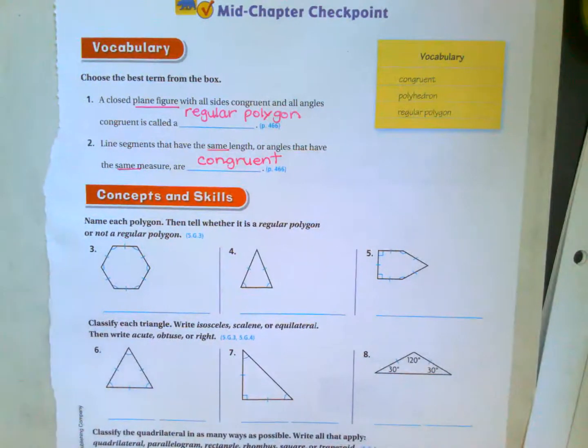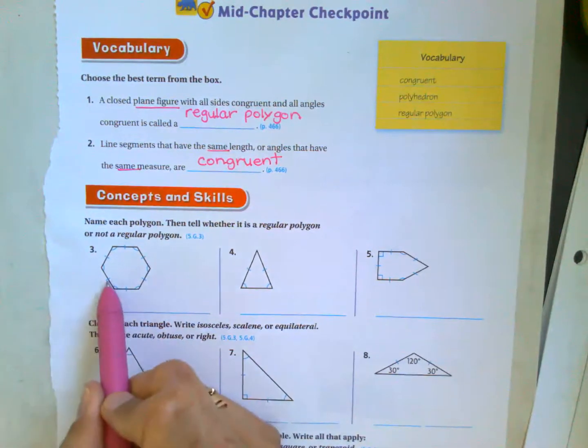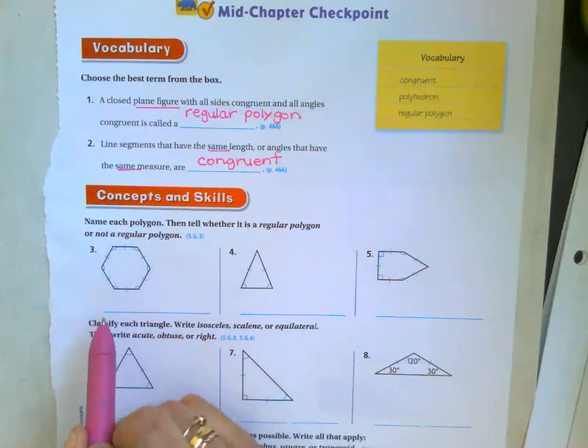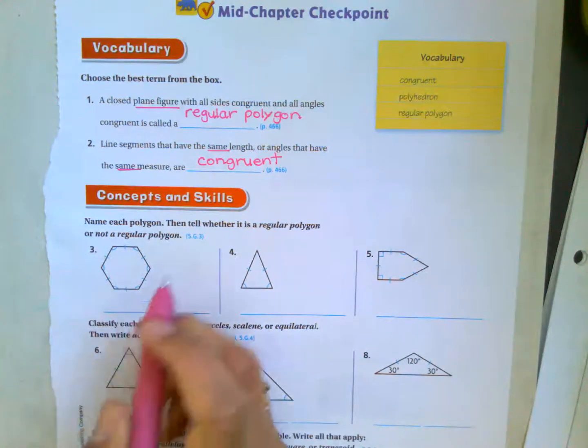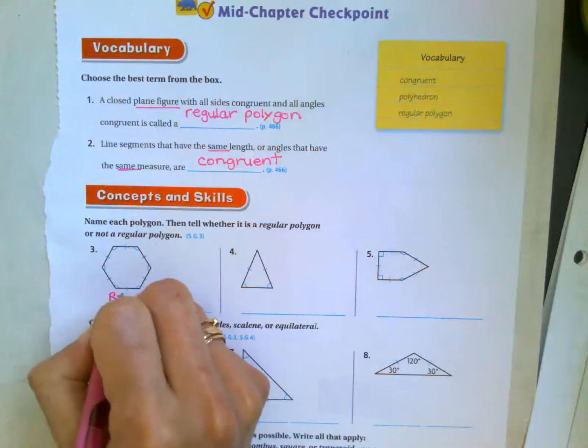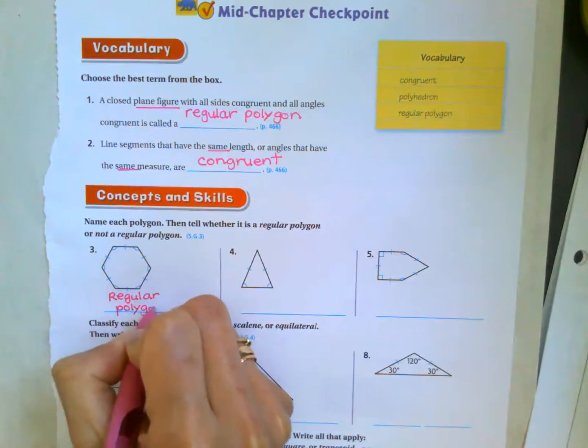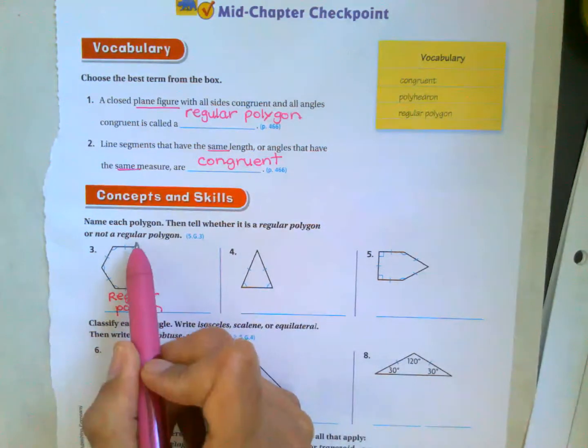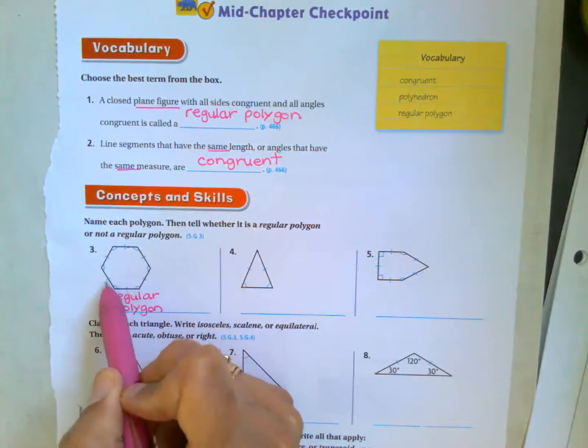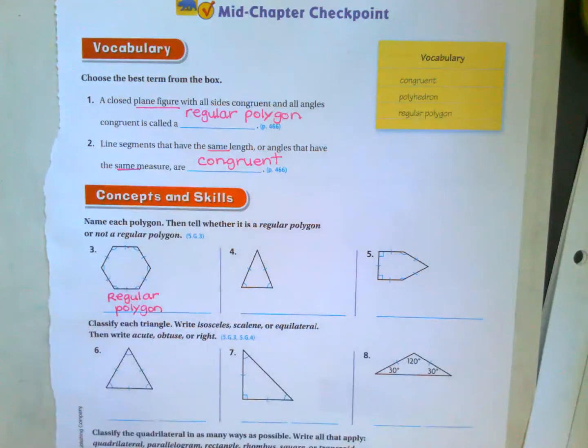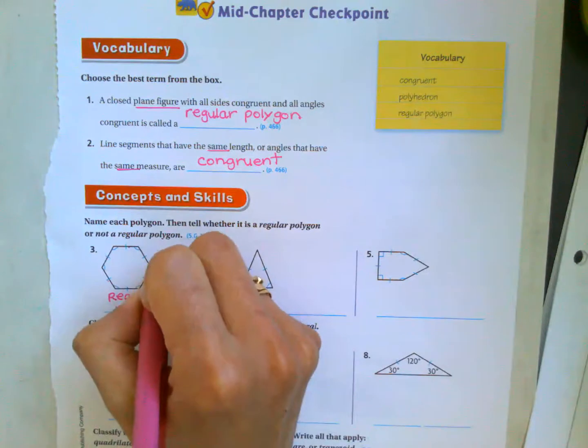For each polygon, name whether it's a regular polygon or not a regular polygon. This one, tick mark on each side means they're all the same. One tick mark for the angles means they are all the same. So this is a regular polygon. And just for extras, let's see which polygon it is. One, two, three, four, five, six. So a six-sided polygon is called a hexagon.